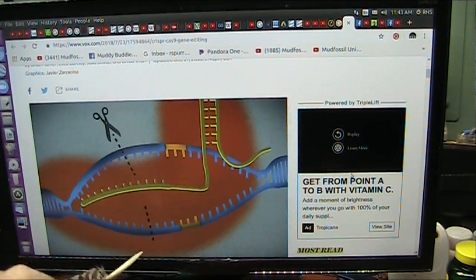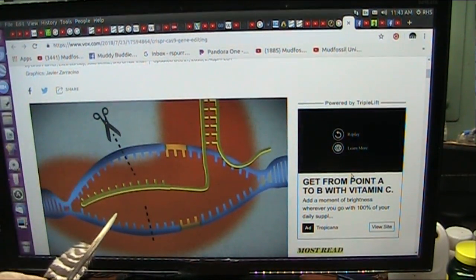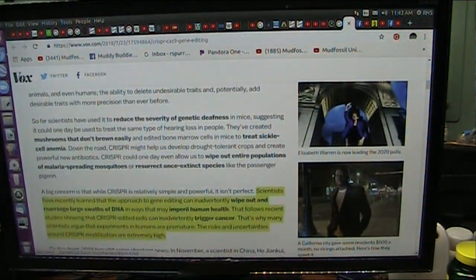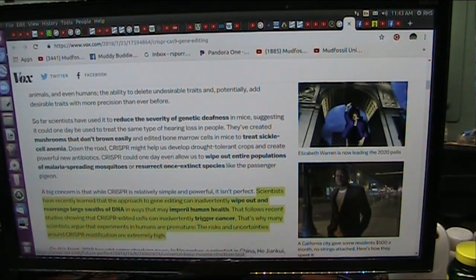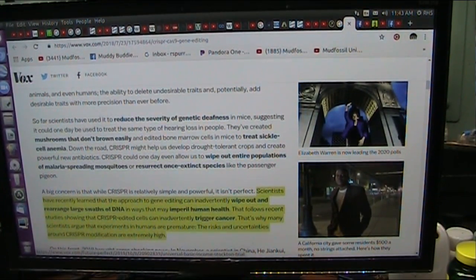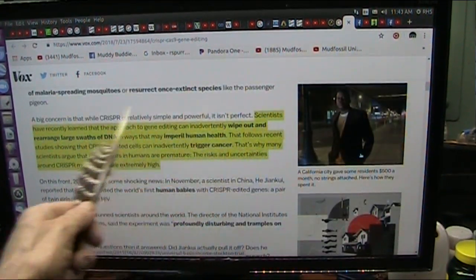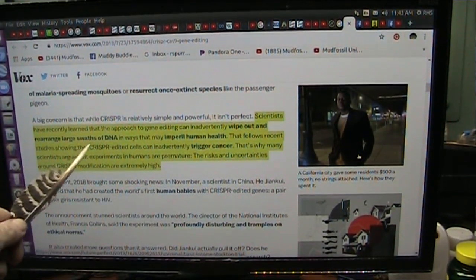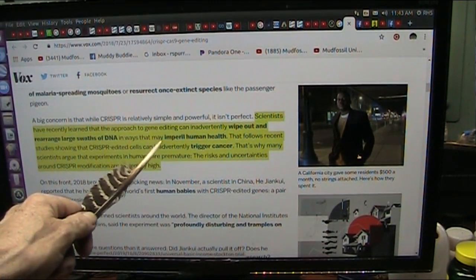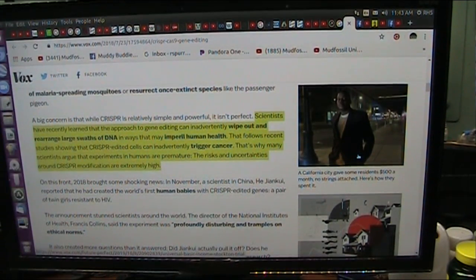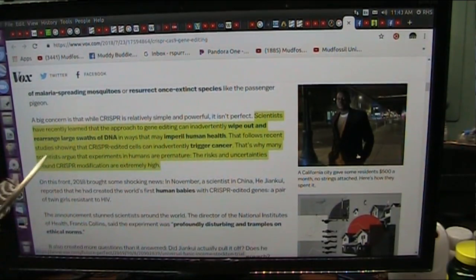You cannot screw around with the source code of any programs and expect it to end up being okay. Scientists have recently learned that the approach to gene editing can inadvertently wipe out and rearrange large swaths of DNA in ways that may imperil human health, not just today, tomorrow, the next day, but your kids and your future kids. It's a disaster.